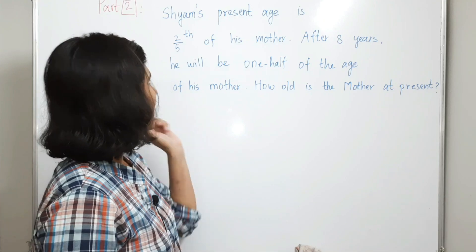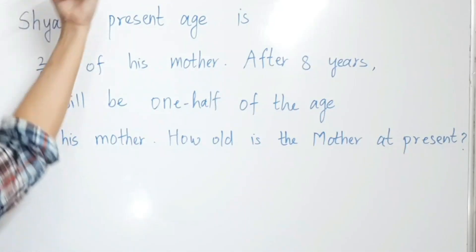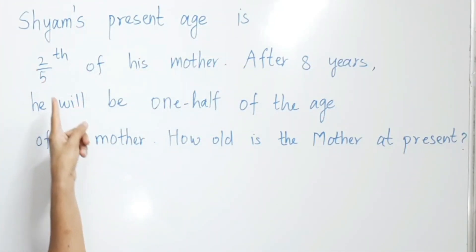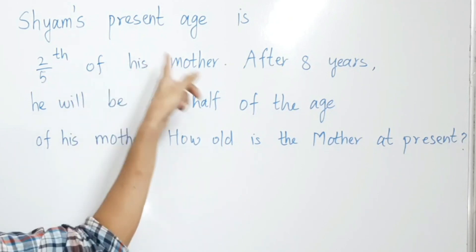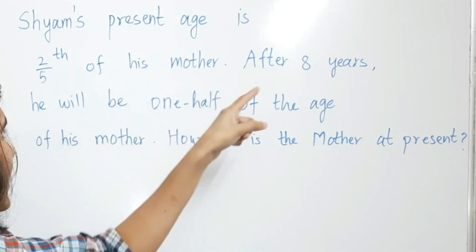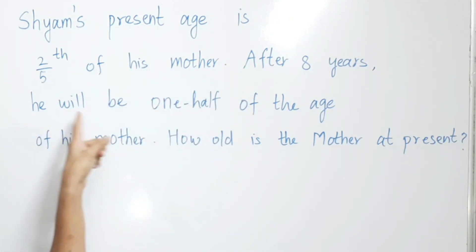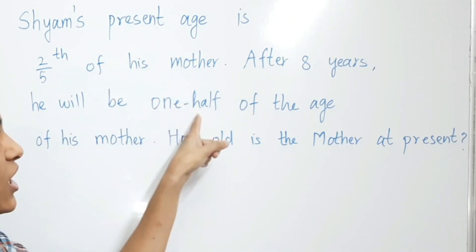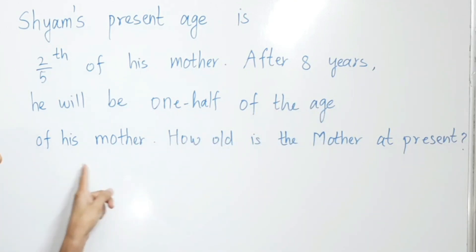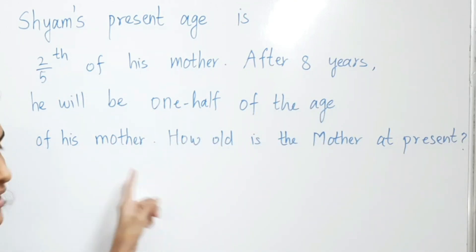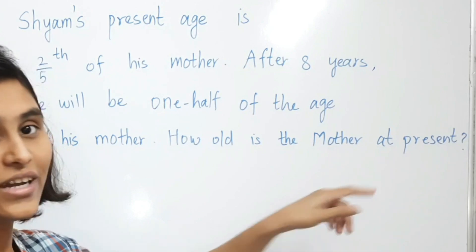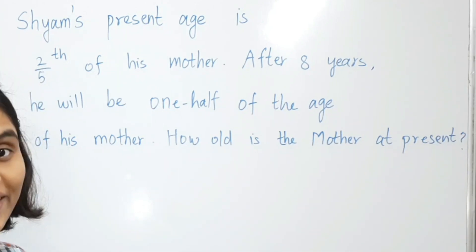Here we have a question: Shams' present age is two-fifths of his mother's. After 8 years, he will be one-half of the age of his mother. The question is: how old is the mother at present?